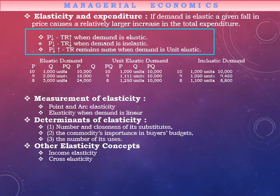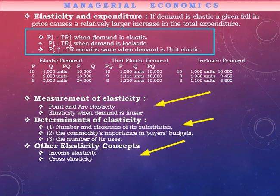There are two methods that can be used for measuring elasticity: point elasticity and arc elasticity. There are many determinants of elasticity — these are the number and closeness of substitutes, the commodity's importance in the buyer's budget, and the number of uses. For example, if a product has multiple uses like electricity, it has different elasticity. Other elasticity concepts include income elasticity and cross price elasticity.